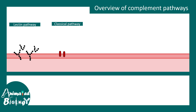There are different pathways of complement activation. Very briefly, there are three pathways. The lectin pathway and the classical pathway start differently. The lectin pathway starts with mannose-binding lectin, which recognizes the sugar moieties on the plasma membrane. The classical pathway is based on antigen-antibody interaction.